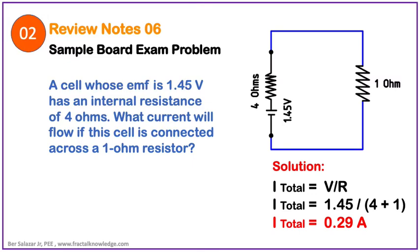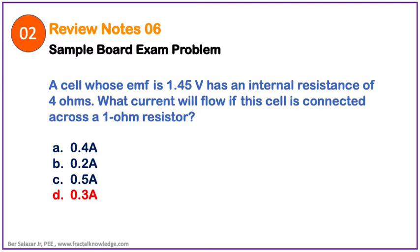Using Ohm's Law, the current flowing in the 1 ohm resistor is equal to the total current of the circuit. Therefore, total current I equals V over R, that is 1.45V divided by the total resistance, which equals 4 ohms internal resistance plus 1 ohm load. The answer is 0.29A. We don't have 0.29A from the choices, but we have 0.3A, so our correct answer is letter D, 0.3A, by the rule of rounding off numbers.